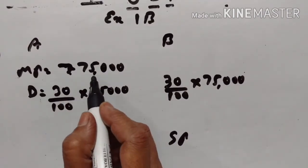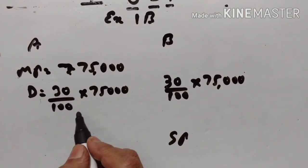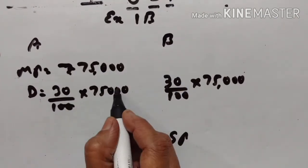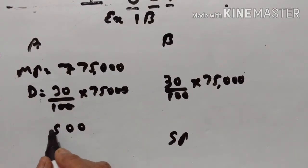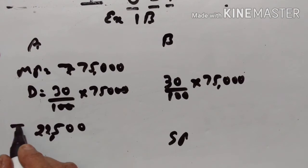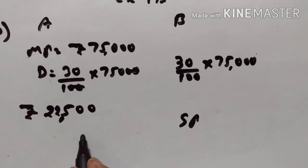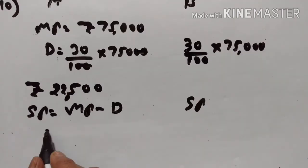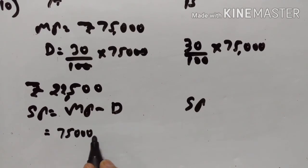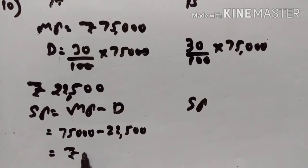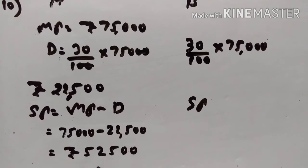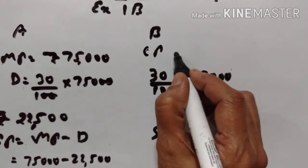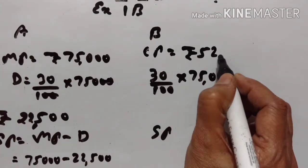Marked price is Rs.75,000. He gives a discount of 30% to B. The discount is equal to Rs.22,500. So selling price is equal to marked price minus discount, which is Rs.75,000 minus Rs.22,500. This is the selling price and becomes the cost price for B, which is Rs.52,500.